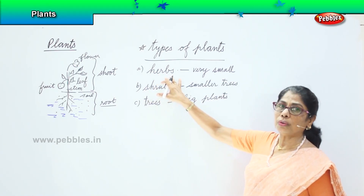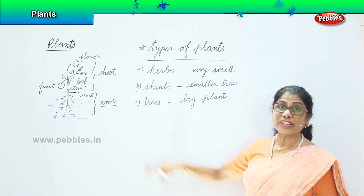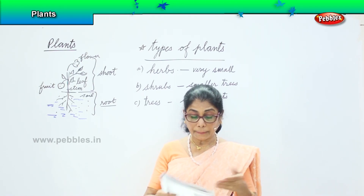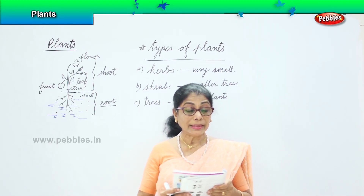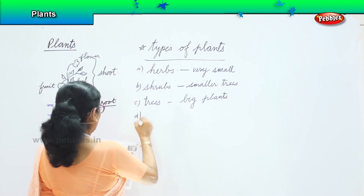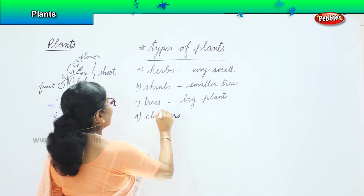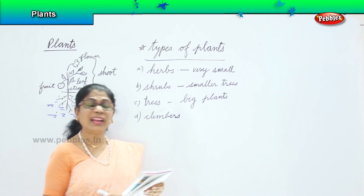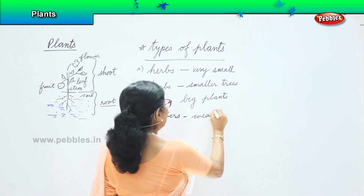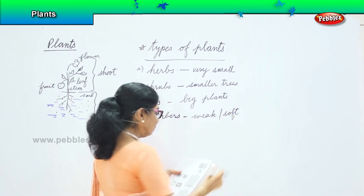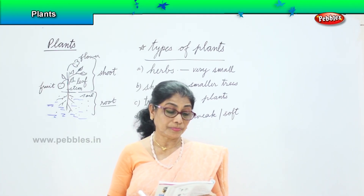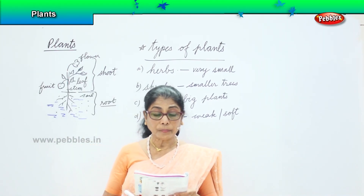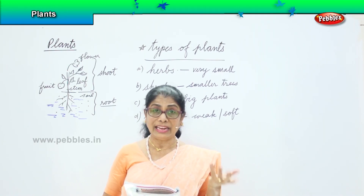To summarize: herbs are very tiny like tulsi and mint; shrubs are like roses and sunflowers; trees are huge like mango and apple trees. Bamboo is the fastest growing plant. Then we have climbers — herbs are small, shrubs are smaller trees, trees are huge plants. Climbers are very weak, soft plants with weak stems that need a support system such as sticks, walls, or trees to climb on. Examples include money plant and grapevine.